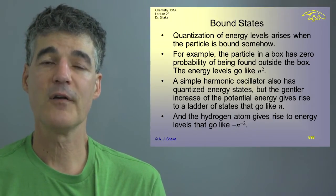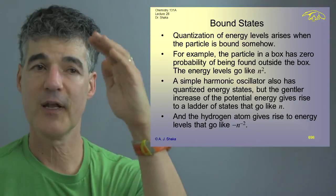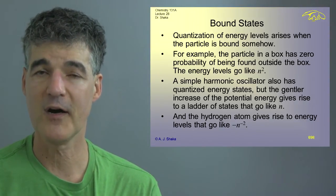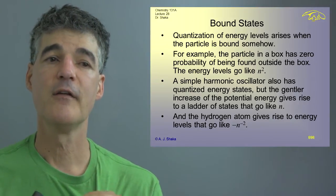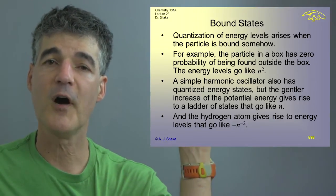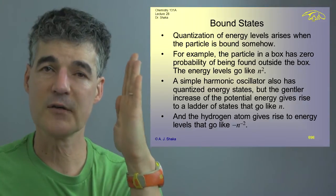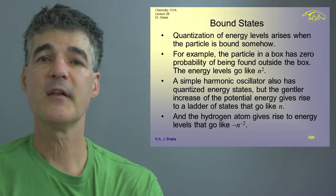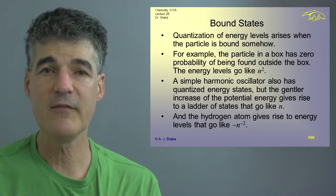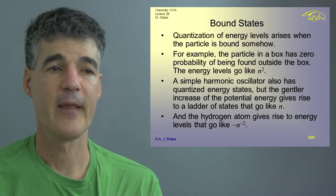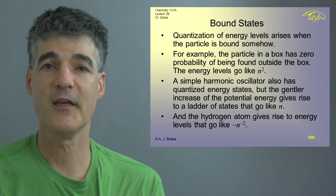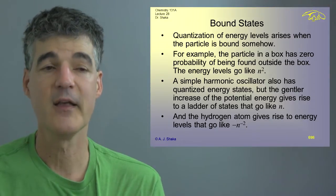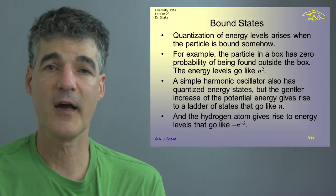And we found for a particle in a box that the ladder of states went like n squared. And there's zero probability of being found outside the box. On the other hand, for the gentler slope of the harmonic oscillator, not so steep like a box, but just x squared, then the levels went like n. They were all evenly spaced. And that's a very classic case to study because it's simple to solve. And we solved it and got the ground state being a Gaussian function.